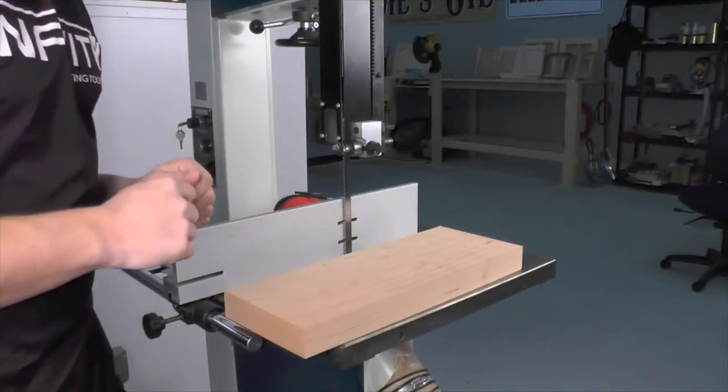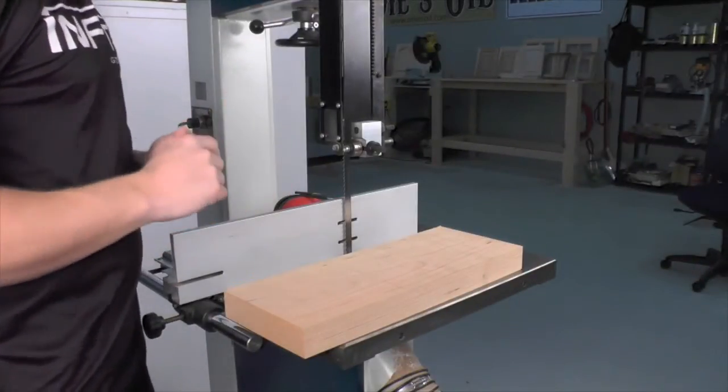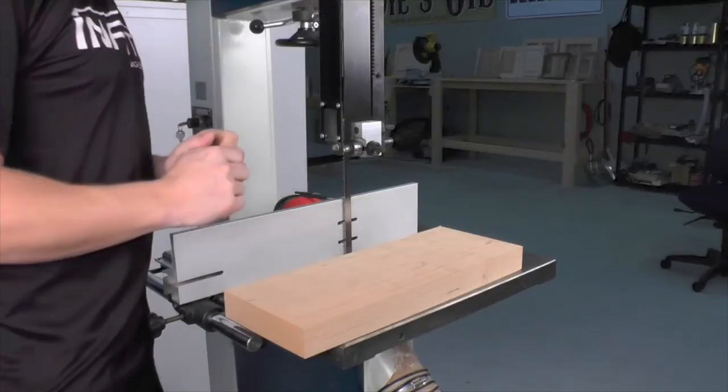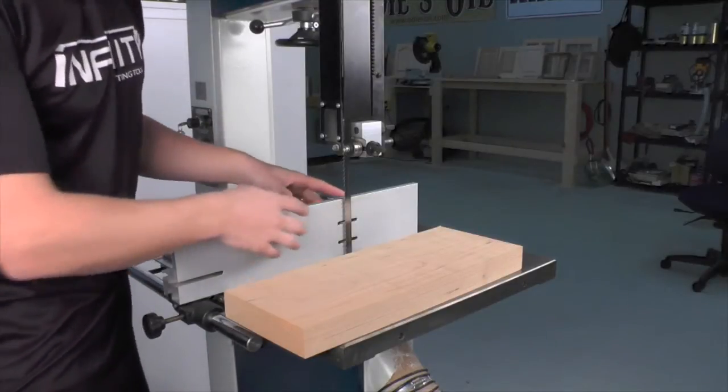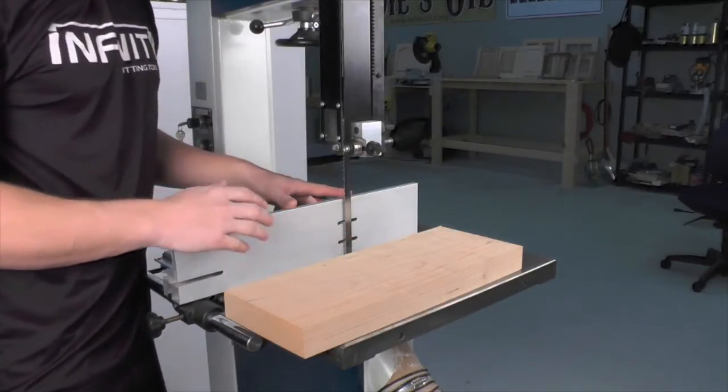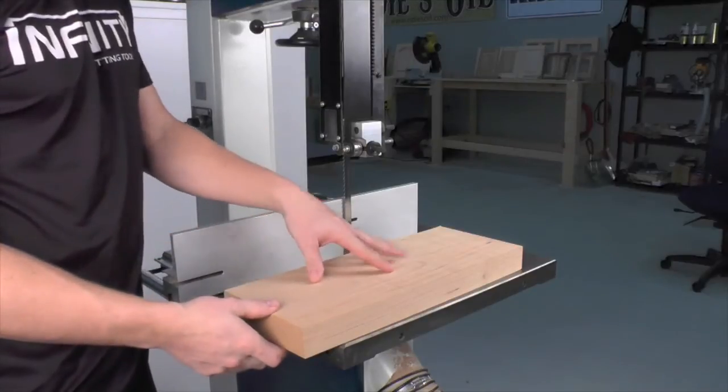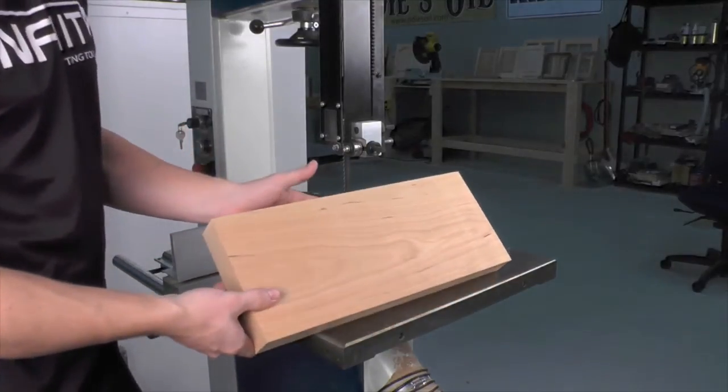Now that we have our saw set up and ready to go, let's make a cut. We know our fence is set appropriately, I've set the space to about an eighth of an inch, so I'm going to make about an eighth of an inch veneer cut out of this piece of seven inch wide cherry.